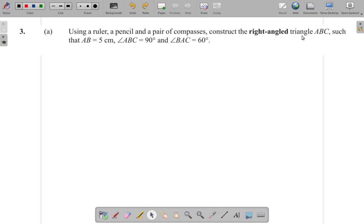Construct the right angle triangle ABC such that AB is 5, ABC is 90, and BAC is 60.